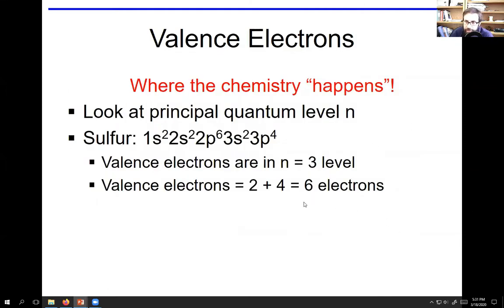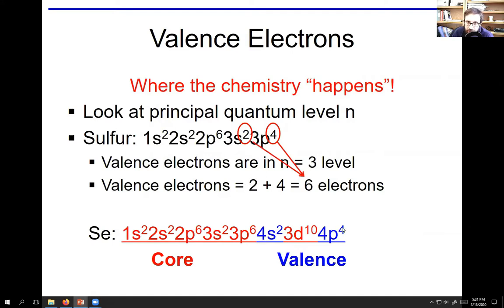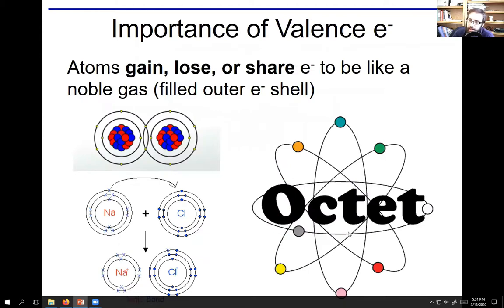Valence electrons is where all the chemistry happens. We just did this with phosphorus, same thing with sulfur. Sulfur would be 1s² 2s² 2p⁶ and then you have six valence electrons 3s² 3p⁴. Those would be the valence, core would be the first eight. For selenium, same idea - this went up to bracket argon, 18 electrons would be core, the remaining 16 would be valence.